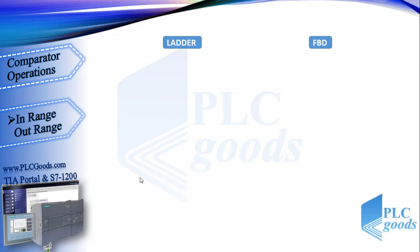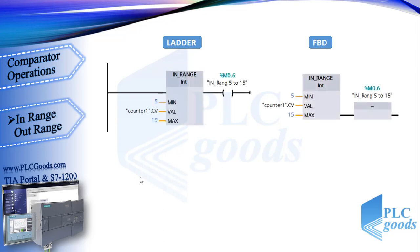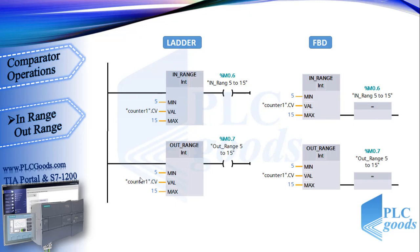Here we have in range and out range instructions. At the first line, when the counter value is a number from 5 to 15 — meaning 5, 6, up to 15 — the output will be on. The out range instruction works inversely: at the second line, the output will be on if the counter value is not a number from 5 to 15.